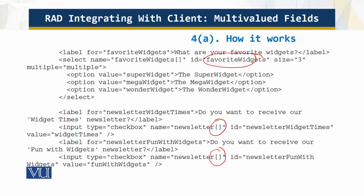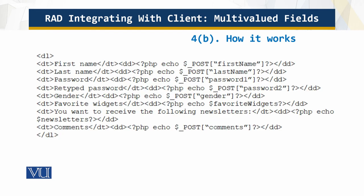The form handler process_registration_multi.php displays the user submitted form data. For the multi-select fields, the script needs to be a bit smarter. First, it creates two empty string variables to hold the list of field values to display: $FavoriteWidgets and $Newsletter. Next, it checks if the corresponding $POST array elements exist. Finally, if any field values were sent, the resulting strings have a trailing comma and space, so the script uses a regular expression to remove these two characters, tidying up the strings. It then outputs these two strings in the web page along with the other single-value fields.